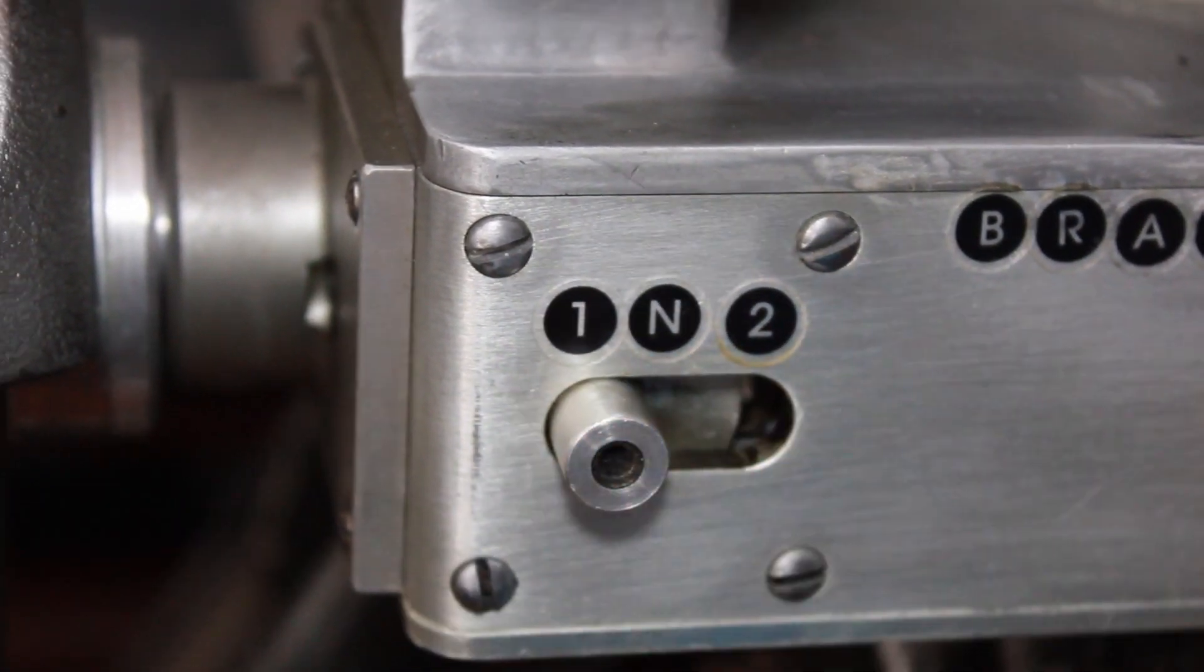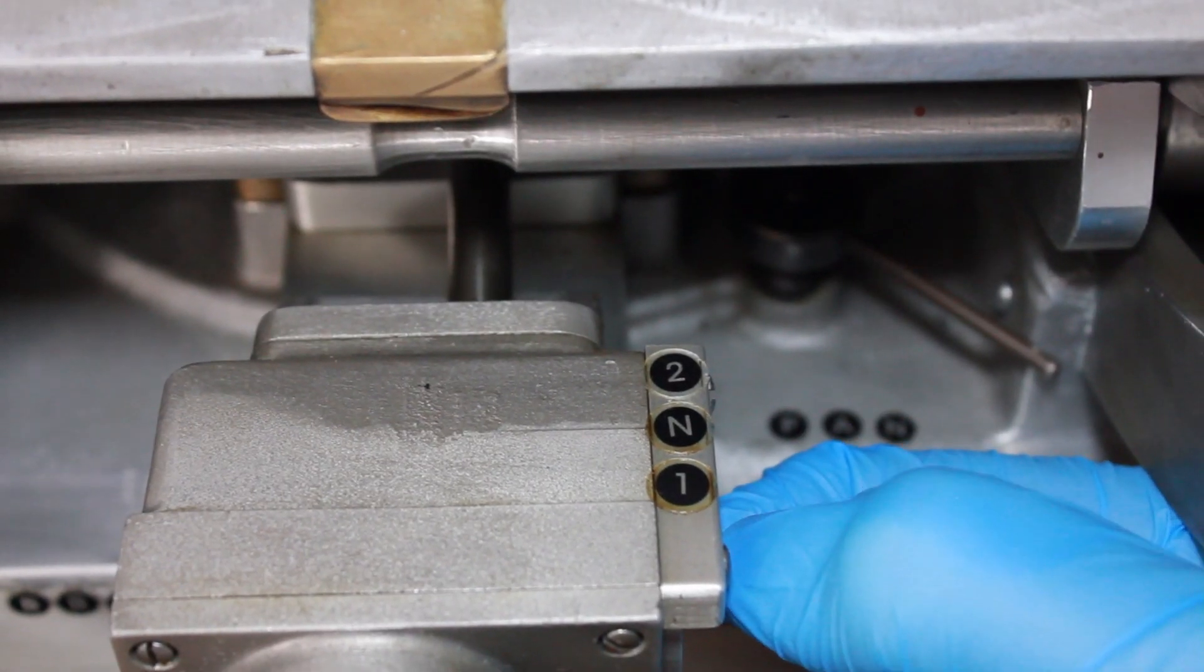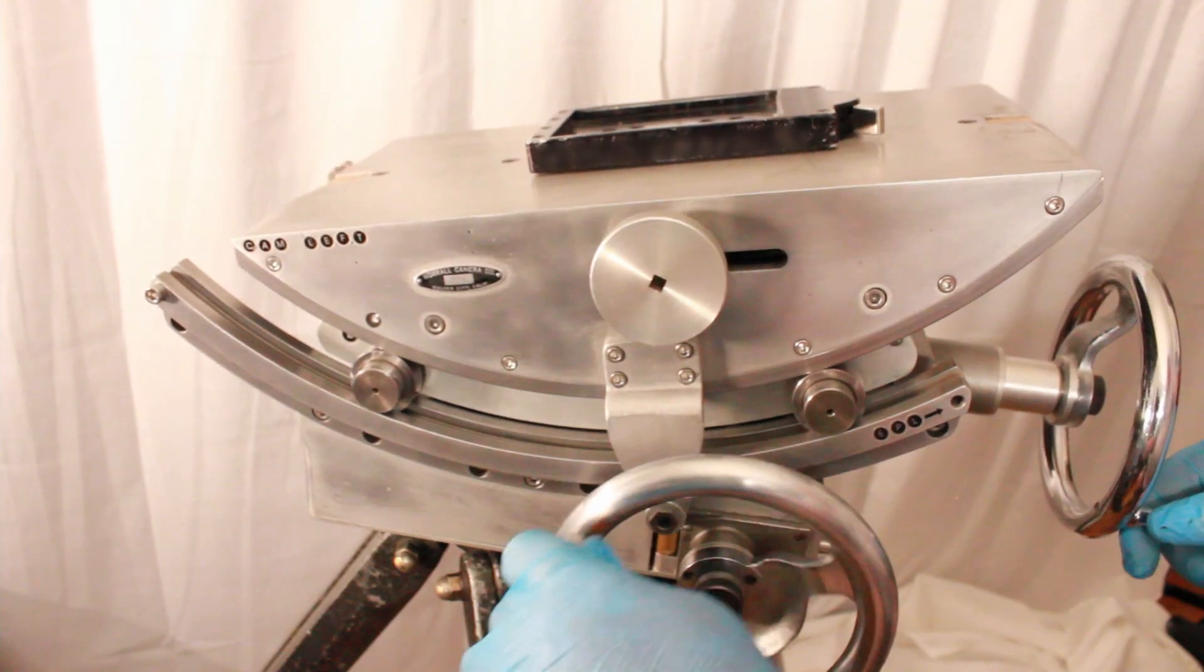Place both pan and tilt into gear one. Release brakes and test for smooth movement.